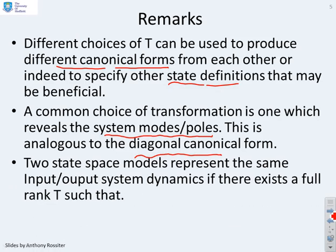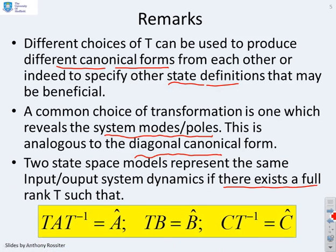Two state-space models represent the same system with the same input-output dynamics if there exists a full rank T such that the following is true: T A T inverse equals A hat, T B equals B hat, C T inverse equals C hat. If we can find a T such that this is true, then the two systems are the same.